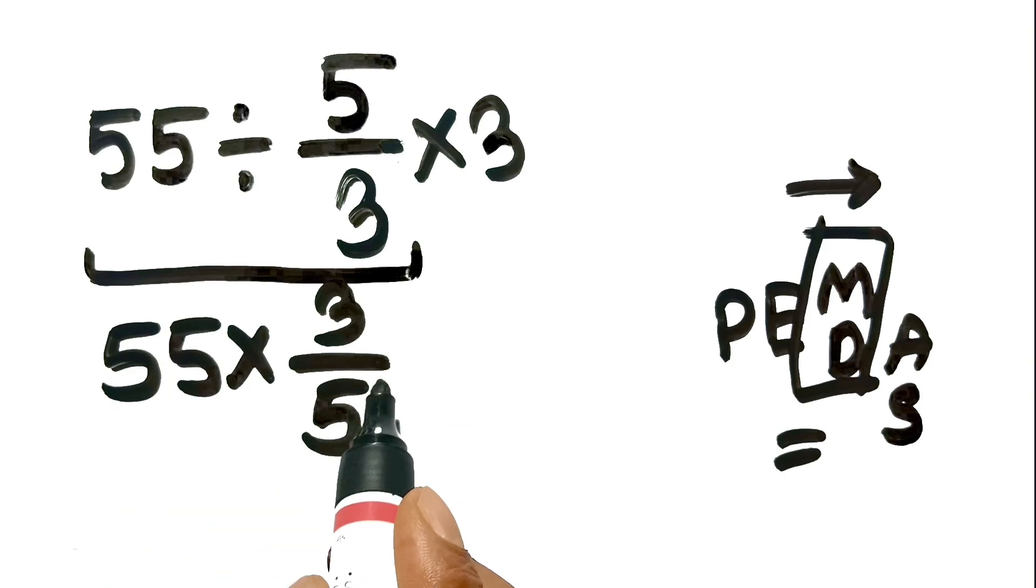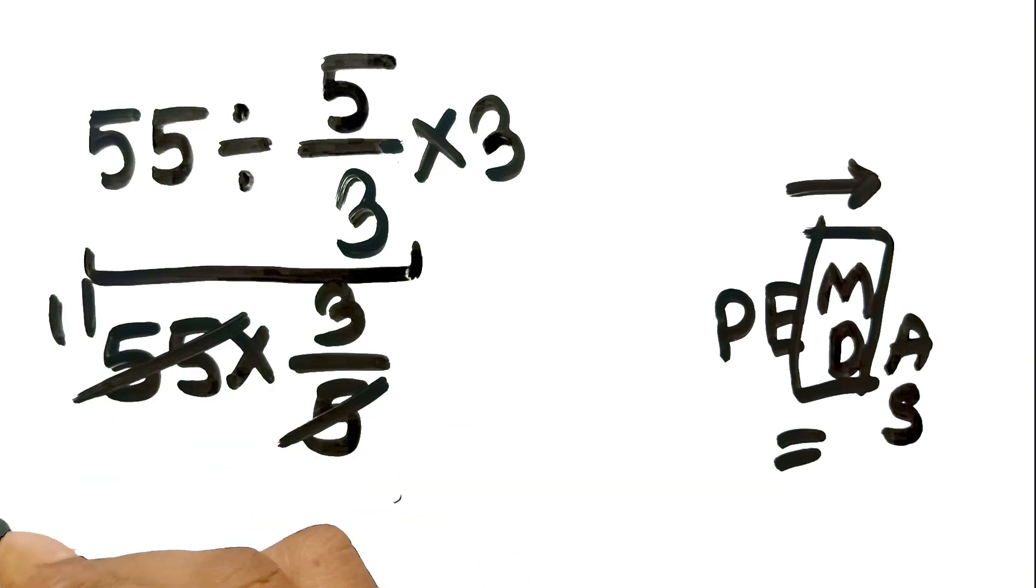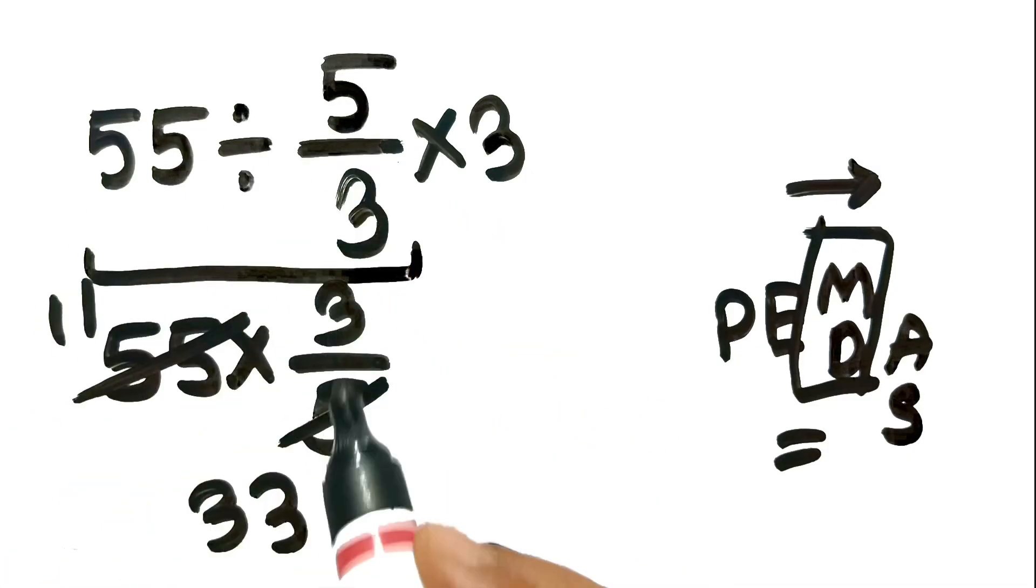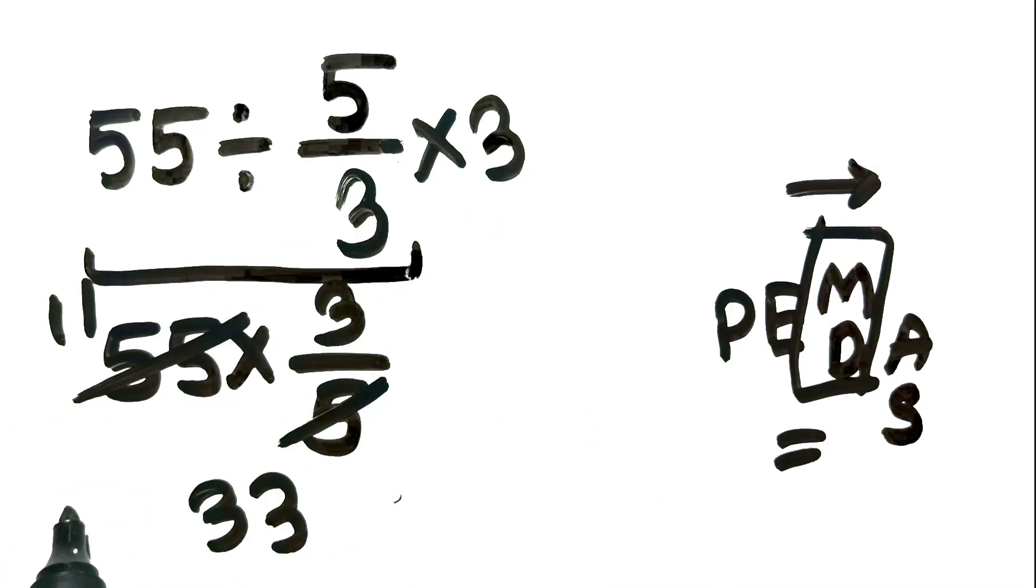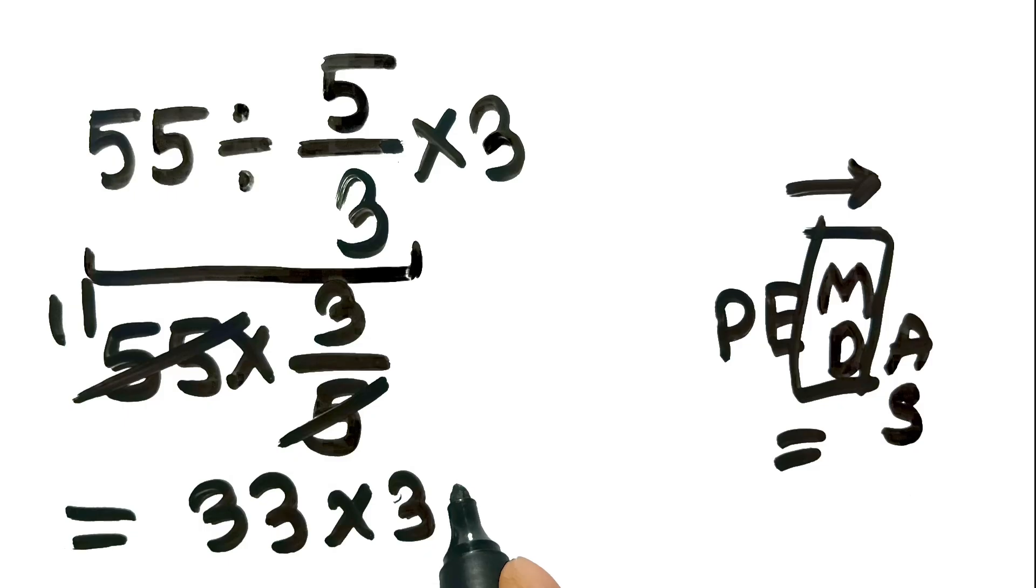55 divided by 5 is 11, and 11 times 3 is 33. So the entire first part of the expression equals 33. Now we bring down the final operation from the original problem. We are left with 33 multiplied by 3. We simply calculate 33 times 3.